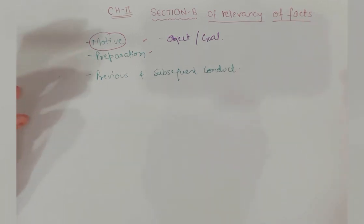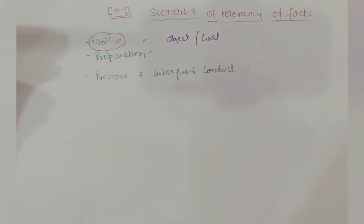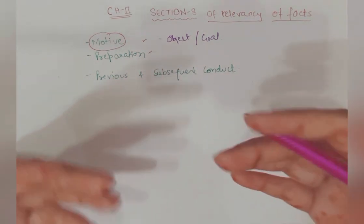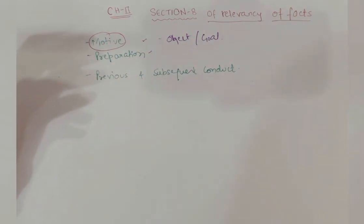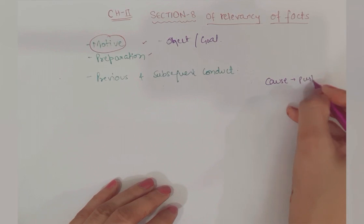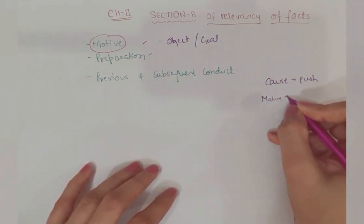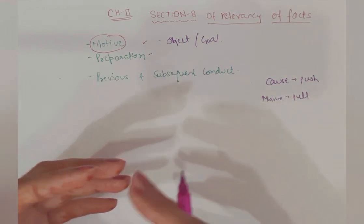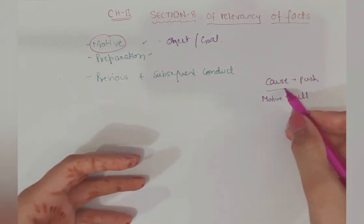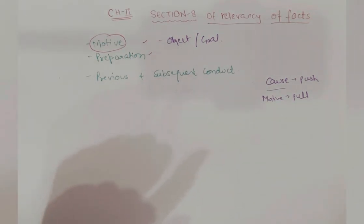For example, if you want to become a lawyer or judge, this is the motive. Motive is somewhere it is a pull, it attracts you. Motive like revenge - it is attracted. Quarrel happened, so this is the cause. It pushes the person to commit a crime. Motive is the ultimate goal whereas the cause is the pushing factor.